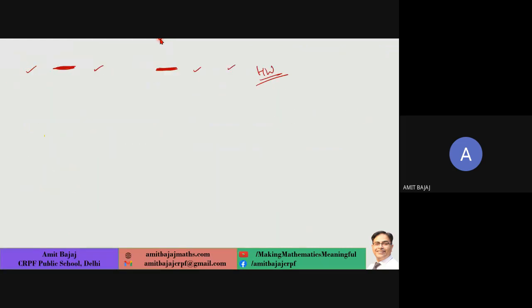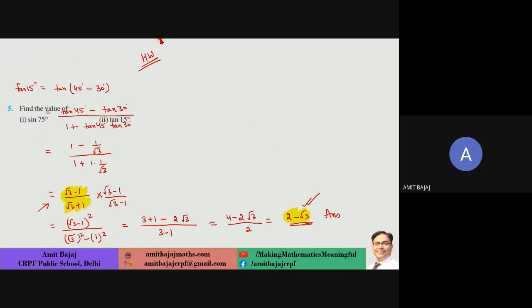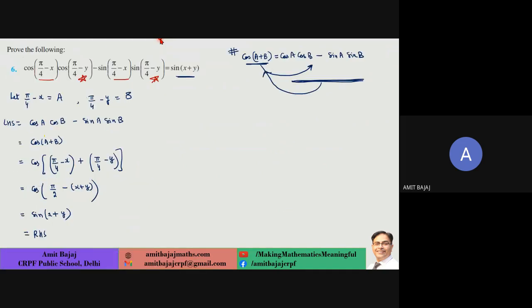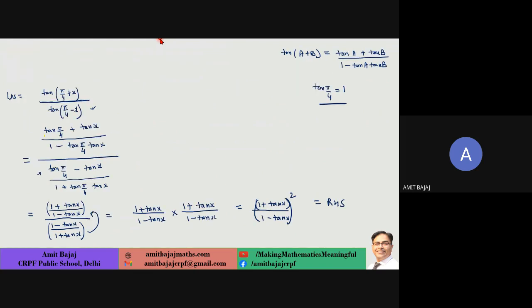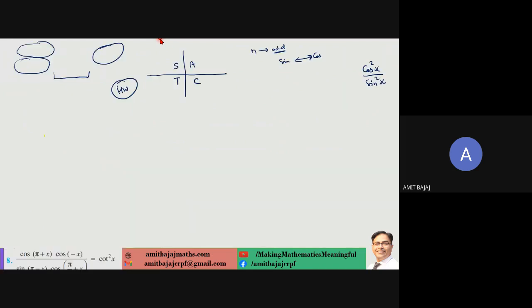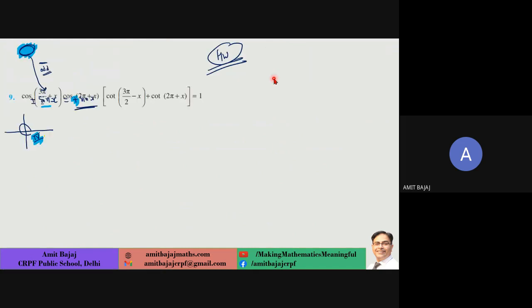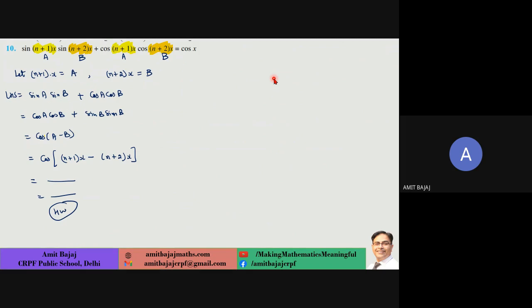In some questions, it's about when to combine terms logically. In this question, using symmetry, the first and third terms were combined first, then followed by simple rules. Exercise 3.3 starting questions were value-based. In other questions, we applied the tan(A+B) and tan(A−B) formulas and simplified. The quadrant rule lets you find the values easily.